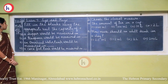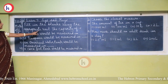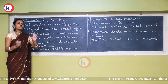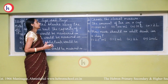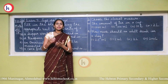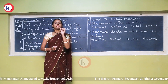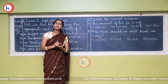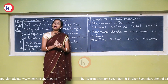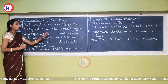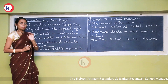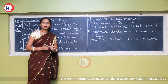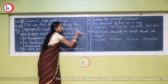Now let's start the first exercise — fill in the blanks using the appropriate unit. The capacity of a dropper would be measured in — a dropper is what we use to give medicine to a child, drop by drop. It can hold only a few drops of liquid. So it will be measured in milliliters, because milliliter is the smaller unit. A teaspoon would also be measured in milliliters, as it holds only a small quantity of liquid.